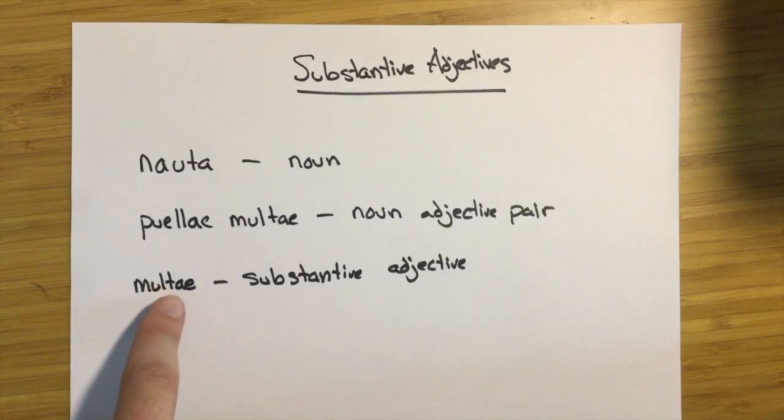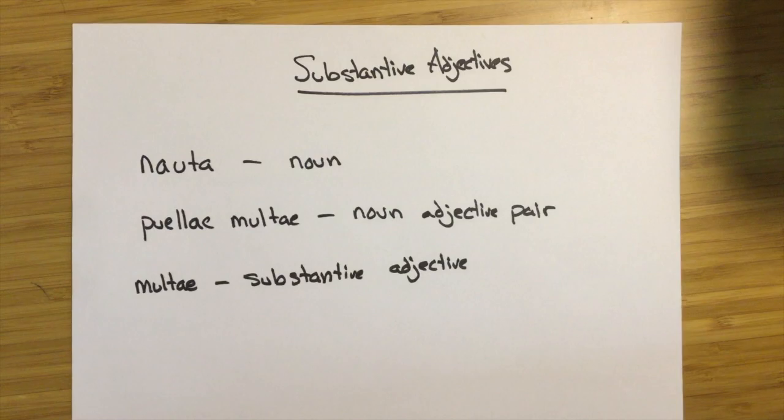The gender of the adjective, when it's not accompanied by a noun, can tell us what the intended unspoken or assumed noun it would go with is. So this can function by itself as a noun that just means multiple women.